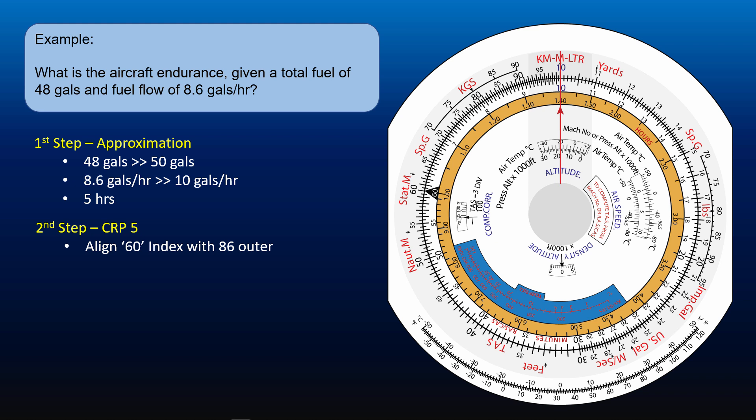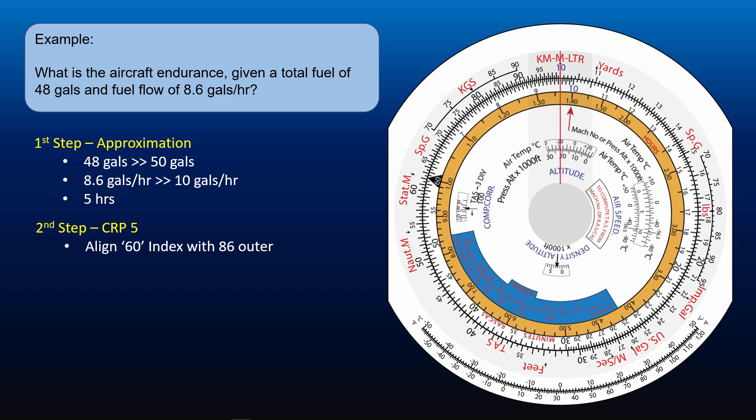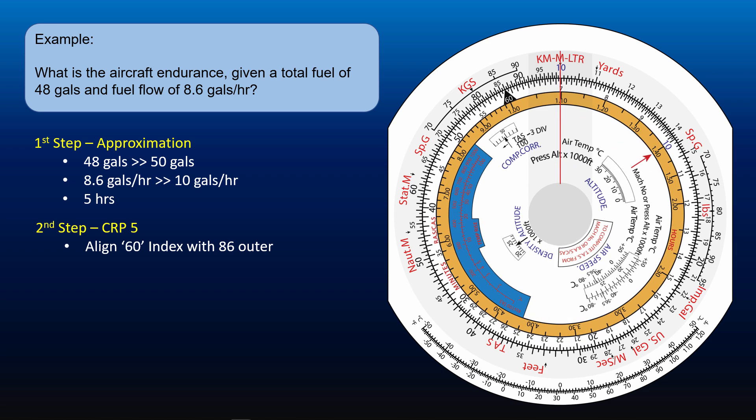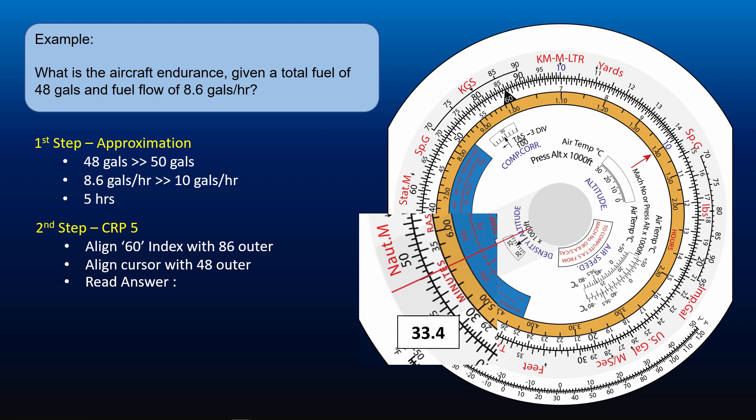Initially align the 60 index on the inner scale with the 86 on the outer scale, representing fuel flow of 8.6 gallons per hour. Next, align the cursor with 48 on the outer scale. Read off the figure on the inner scale: 33.4.